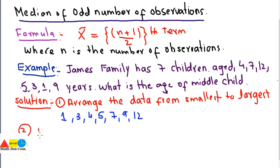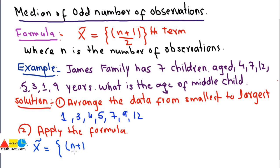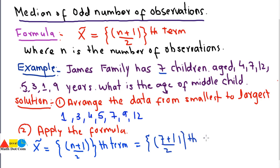Step 2 is to apply the formula. Here n = 7, so x̃ = (7+1)/2 = 8/2 = 4th term. The 4th term in the arranged data is 5. Therefore, the age of the middle child is 5 years, which is the median of the given set of data.